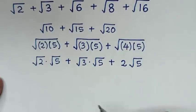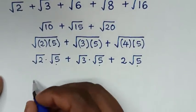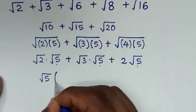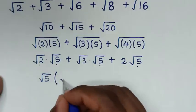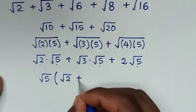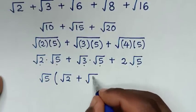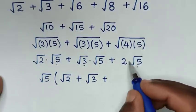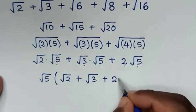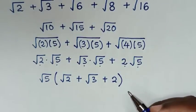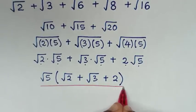In the next step, square root of 5 is common, so we take square root of 5 out of the bracket. Dividing each term by square root of 5, we get square root of 2 plus square root of 3 plus 2 inside the bracket. This is the simplified value in the numerator.